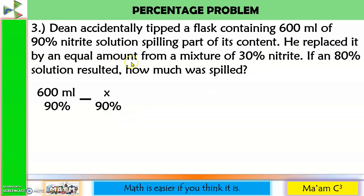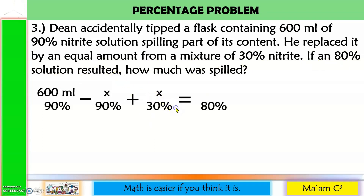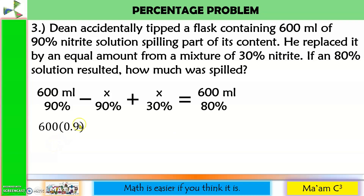He replaced it by an equal amount X from a 30% nitrite mixture. The total volume remains 600 ml since minus X plus X cancels out. Setting up the equation: 600 times 0.9 minus 0.9X plus 0.3X equals 600 times 0.8.